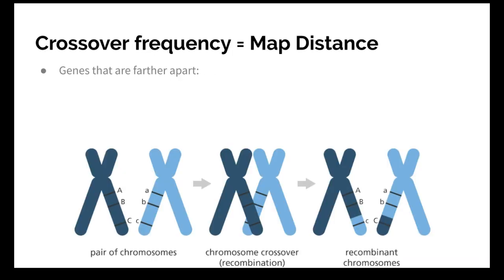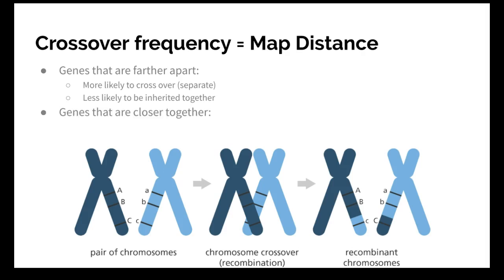If they're farther apart they have a larger crossing over frequency, meaning they cross over more often, and that means they're less likely to be inherited together because if they cross over they're going to go to opposite cells. If they're closer together it's the opposite — a smaller crossing over frequency means it happens less often, and that means they're going to be inherited together more because they're not going to cross over as often.